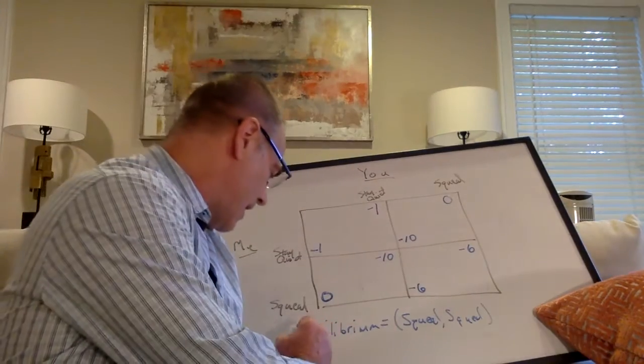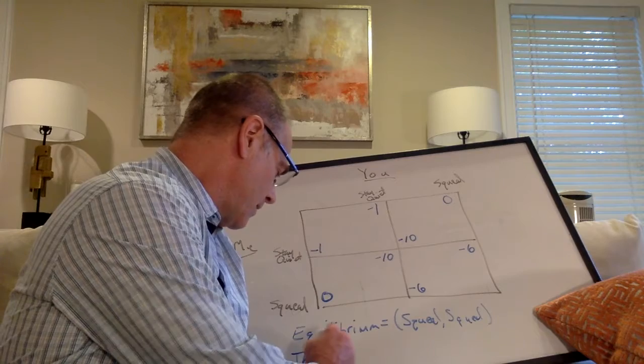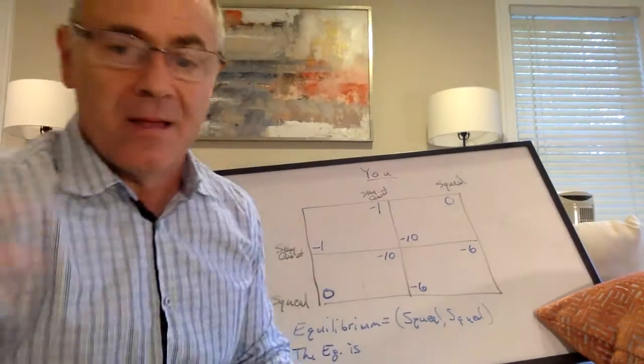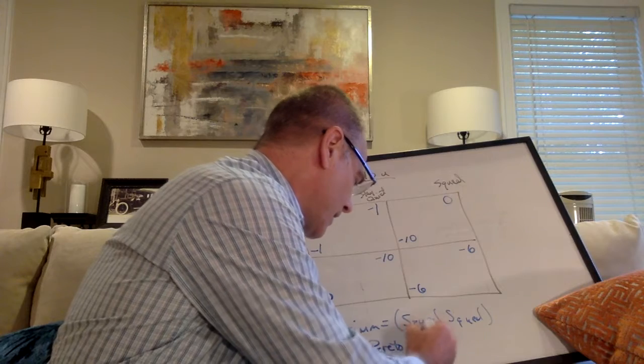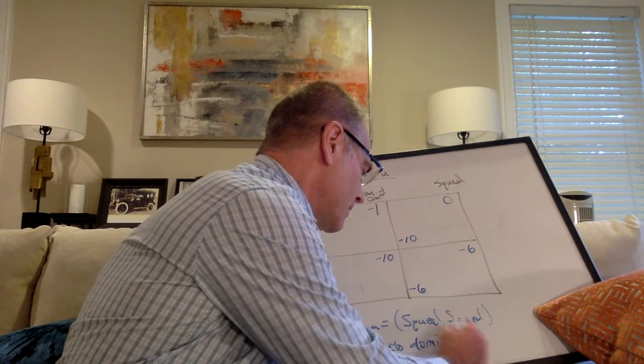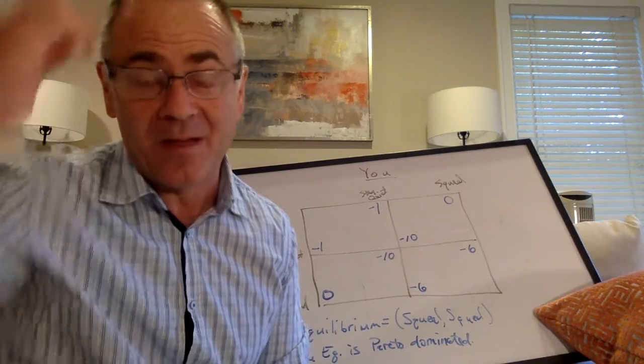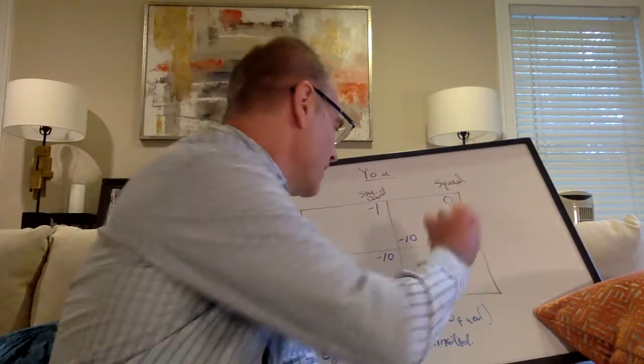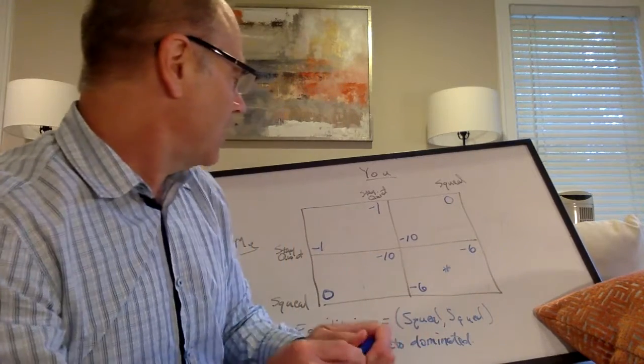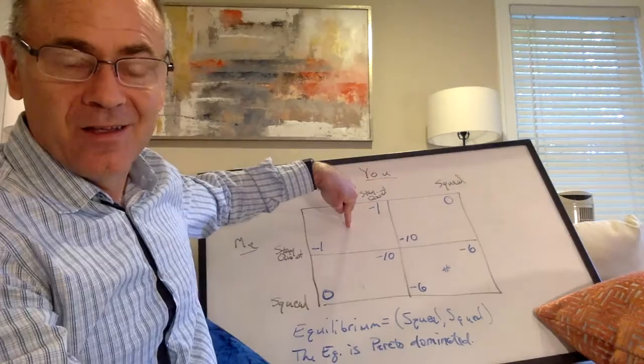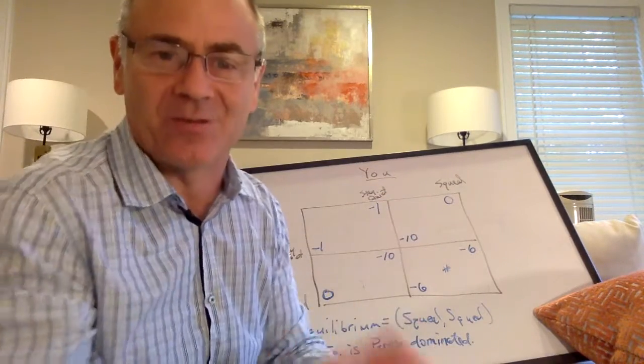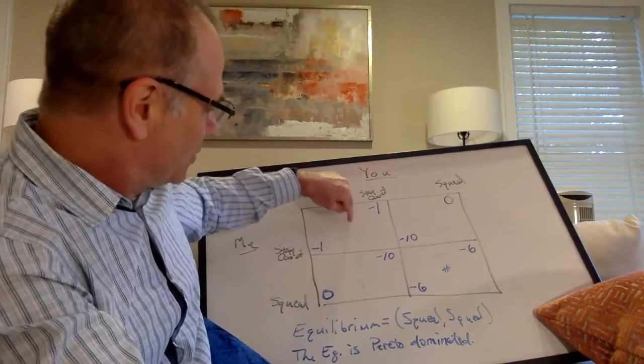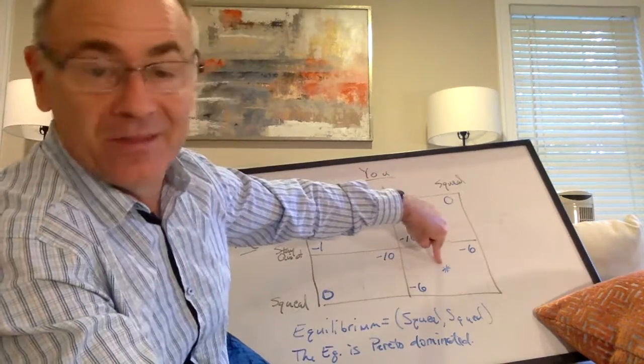Third thing to know is that the equilibrium is what we call in economics Pareto dominated. What that means is there's another outcome that makes both of us better off. The equilibrium is Pareto dominated by stay quiet-stay quiet. We could just sign contracts with each other and make an agreement - I'm going to stay quiet, you stay quiet. Let's make this agreement. If we could just do that, we would be both better off with getting one year in jail than six.